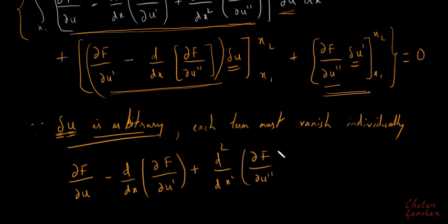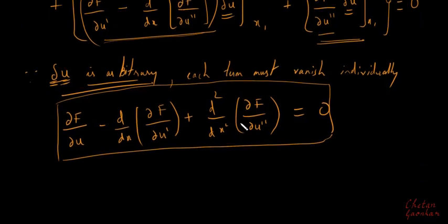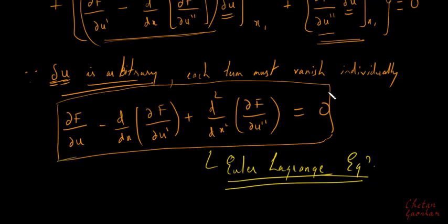From the first term we get: ∂f/∂u − d/dx(∂f/∂u') + d²/dx²(∂f/∂u'') = 0. This is the Euler-Lagrange equation — a very important equation that will help us convert the governing differential equation into its equivalent integral form.